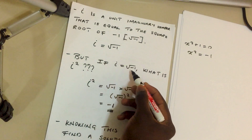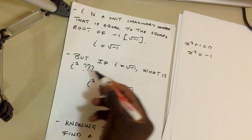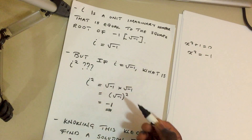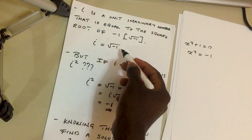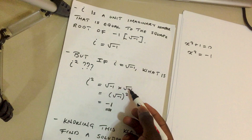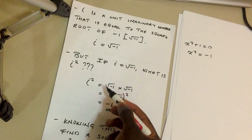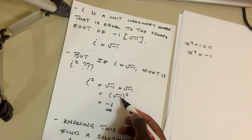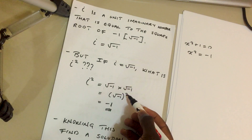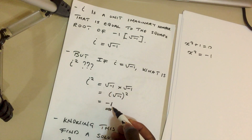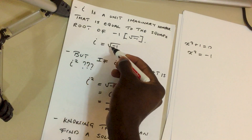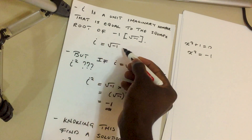Since i equals the square root of negative one, what is i squared? i squared is the same as i times i, which is the square root of negative one times the square root of negative one. We can simplify this as the square root of negative one to the power two, where the power cancels out with the square root, leaving us with negative one. So i squared equals negative one, and i alone equals the square root of negative one.